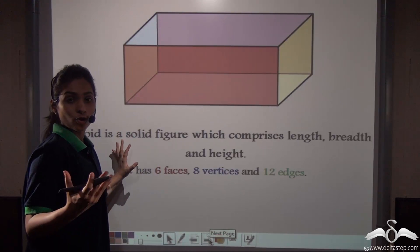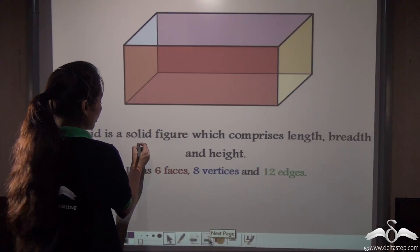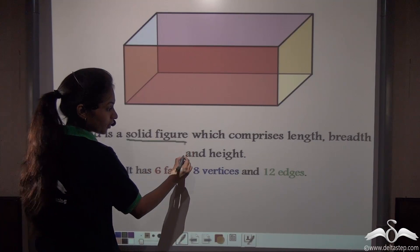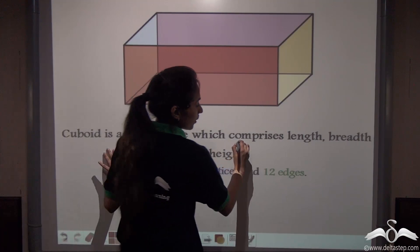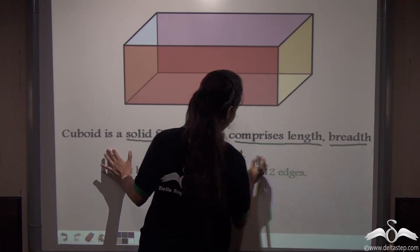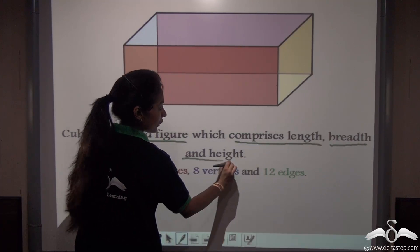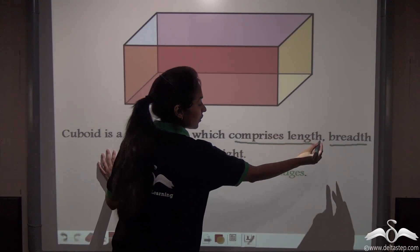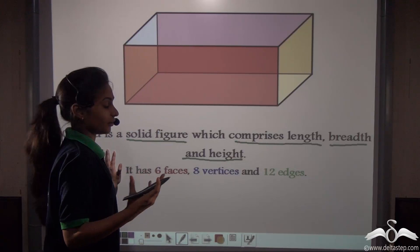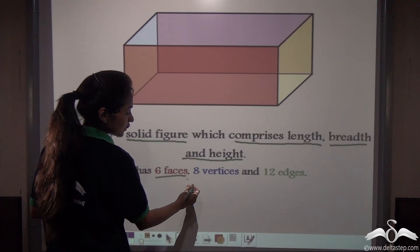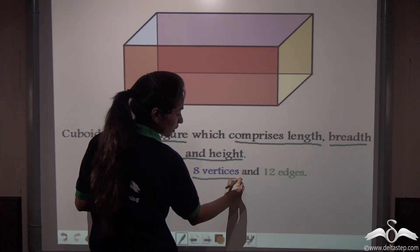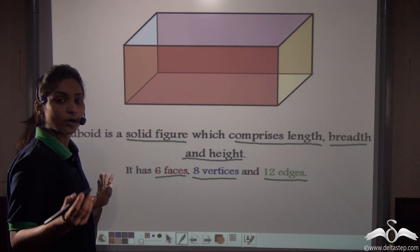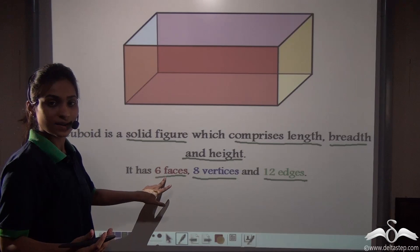So now you know what a cuboid is. A cuboid is a solid figure which has length, breadth, and height. It has three dimensions, and all three dimensions are different. It has six faces, eight vertices, and twelve edges. A cuboid will always have six faces, eight vertices, and twelve edges.